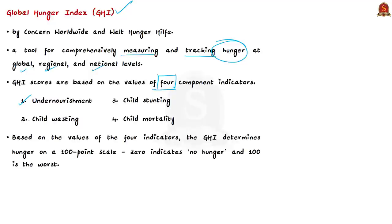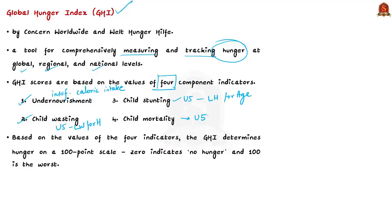The four indicators are: undernourishment, which refers to the share of population with insufficient caloric intake; child wasting, which refers to the share of children under age 5 who have low weight for their height — reflecting acute undernutrition; child stunting, which refers to the share of children under 5 who have low height for their age — reflecting chronic undernutrition; and child mortality, the mortality rate of children under age 5, which partly reflects the fatal mix of inadequate nutrition and unhealthy environments. Based on these four indicators, the GHI determines hunger on a 100-point scale.